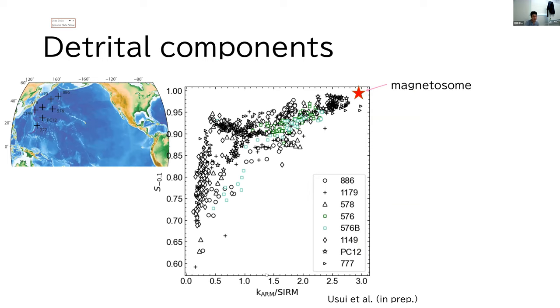Because these quantities are both normalized by SIRM, mixing of two components would produce a straight line on this plot.